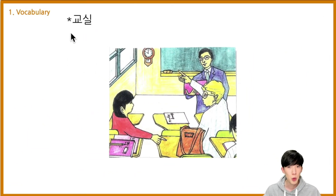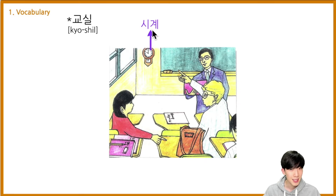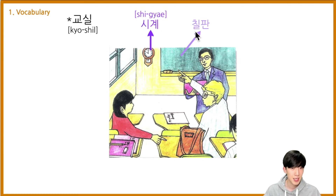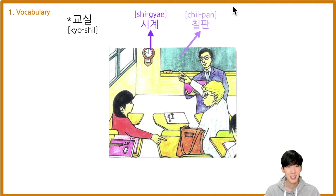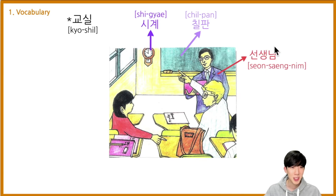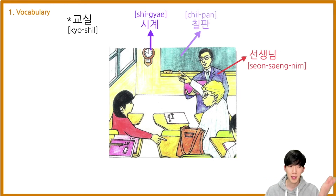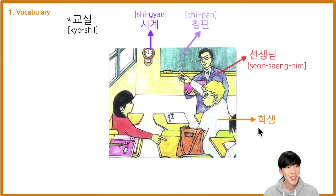So first one — 교실. Classroom. The first one: clock — 시계. 맞아요. 시계. The blackboard — 칠판. 칠판. Teacher — 선생님. 선생님. Next one, student — 학생. 학생. 좋아요.